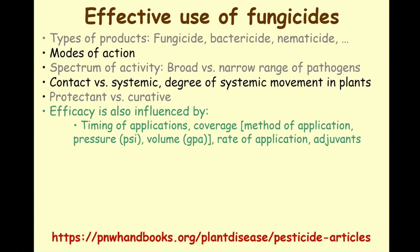Another thing that can really influence efficacy is whether or not you use adjuvants — things like stickers and spreaders. If you're putting a fungicide on a crop that has a very waxy leaf, like onions or cabbage, some products just roll off the leaf, so you end up wasting product if you don't use the correct adjuvant. Some products come with their own built-in adjuvant, like Bravo Weatherstick. It's very important to read the label and understand whether you should apply some kind of spreader or sticker adjuvant to the product.